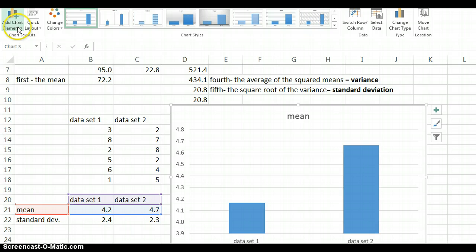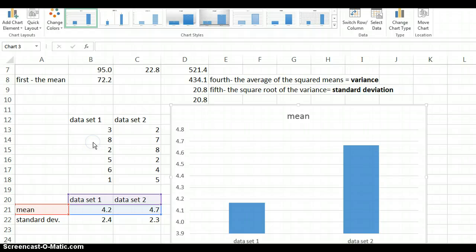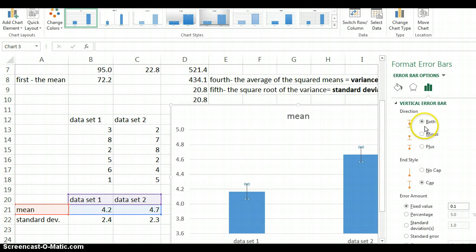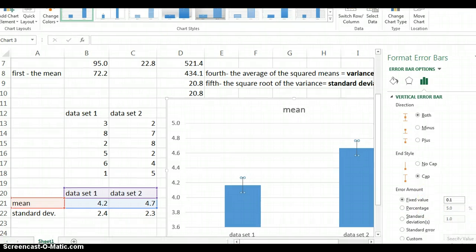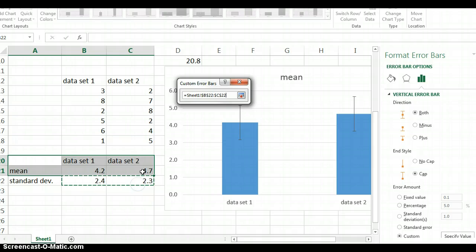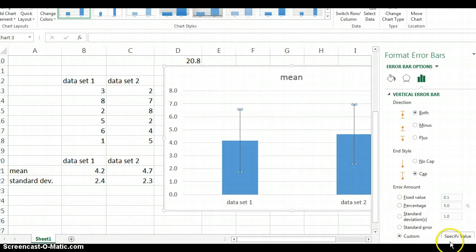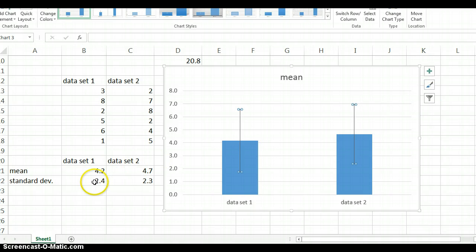And then we're going to go up to chart elements to add the standard deviation bars. Now, add chart elements might not be in the top left corner of your version of Excel. You might need to look around for it. It's always in chart tools. And if you can't find it, just use the help menu in Excel. So add chart element, error bars. And I want to make my own error bars. I don't want to use anything standard. Okay. So I'm going to do both plus and minus. I'm going to put a cap so we can see it. And then I want to click custom so I can specify the values based on the math that we did earlier. Okay. Now see how those bars shifted? They changed to reflect the actual calculated standard deviation.